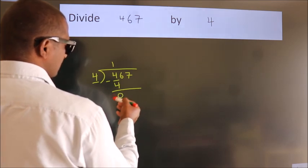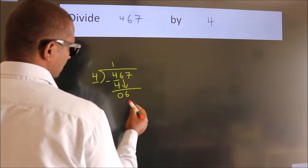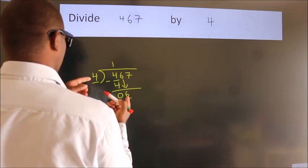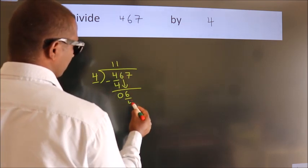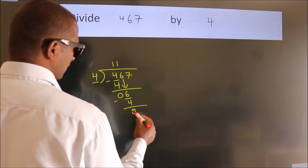After this, bring down the beside number. So 6 down. So 6. A number close to 6 in 4 table is 4 once, 4. Now we subtract. We get 2.